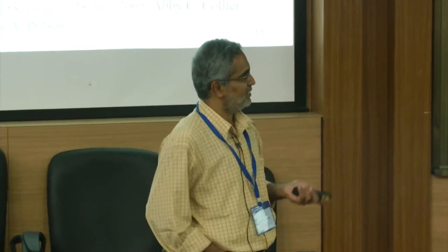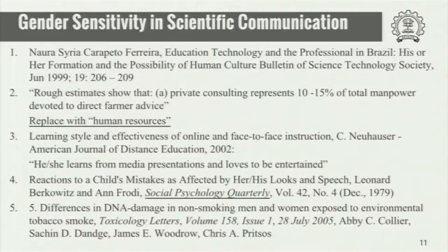Terms like 'Man Machine Interface,' 'Man Survival,' and 'Yeast and Man' appear in older famous journals. In contrast, more recent journals have updated their guidelines. One article reads 'Education Technology and the Professional in Brazil, His or Her Formation' — showing awareness that educational professionals can be men, women, or third gender. Another example from Social Psychology Quarterly: 'Reaction to a Child's Mistakes as Affected by His/Her Looks' — that is how we are supposed to write.